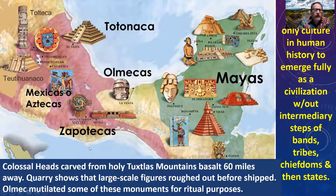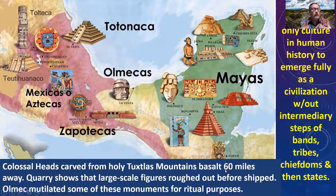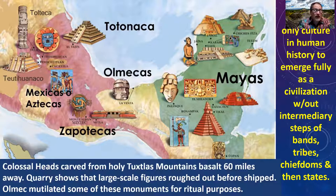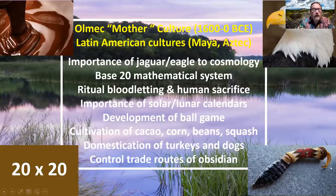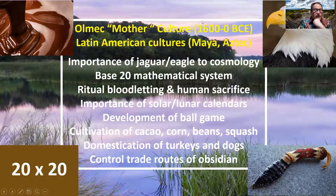Their most famous artworks are the colossal heads — four and a half to five feet tall, weighing thousands of tons, carved from the holy Tuxla mountains about 60 miles away. The quarry shows large-scale figures roughed out before they were shipped. After the death of whoever they represent — whether a king or ball player — some monuments were mutilated, possibly as sacrificial ritual or to signal a new god-king. The Olmec are considered the mother culture of all Latin American cultures — Mayan and Aztec — living from 1600 to about 0 BCE.